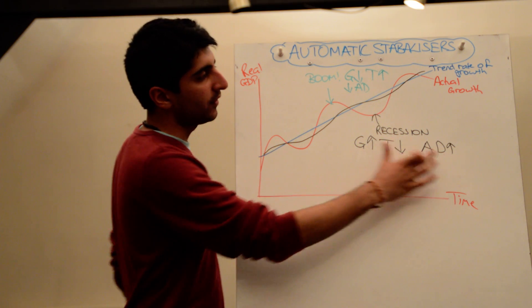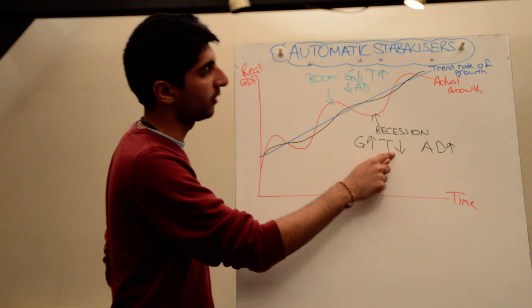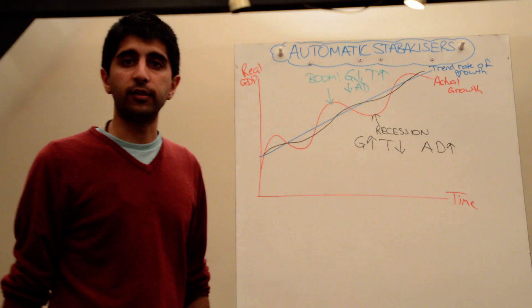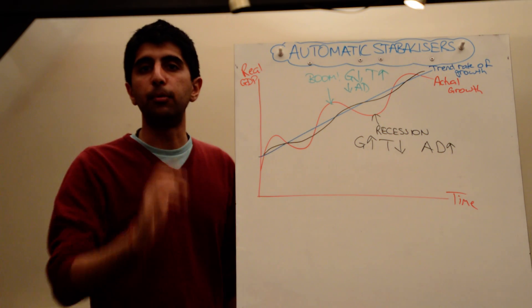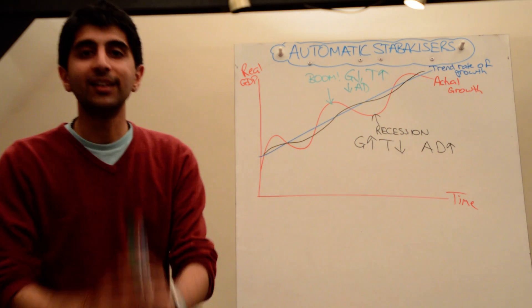But of course the effects of these can be quite small, so active fiscal policy via these forms in recession and these forms in a boom may still be necessary to actually reduce the overall effects of the recession and to reduce the rampant inflation and rampant growth caused by a boom period. I hope that all makes sense with automatic stabilizers. See you next time, thank you.